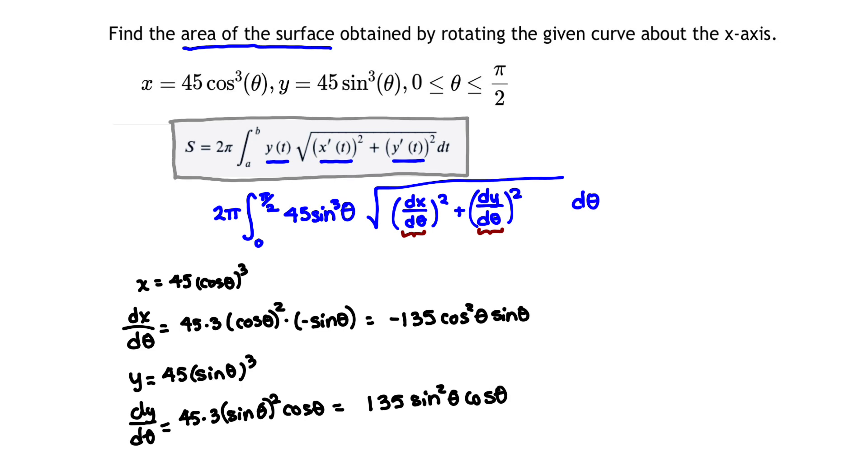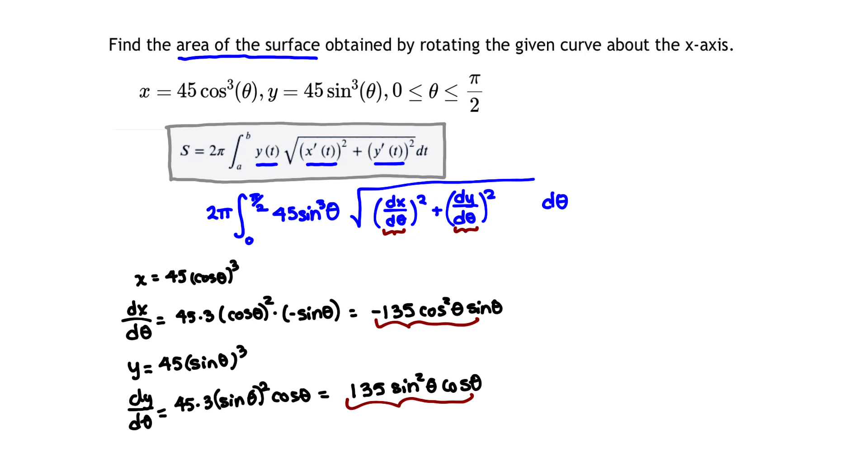And that amounts to, when I simplify it, 135 sin²θ cos θ. These are the values that I want to use to replace into my formula and square them.